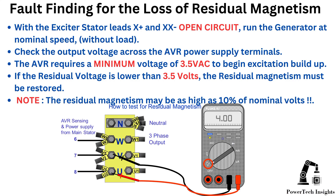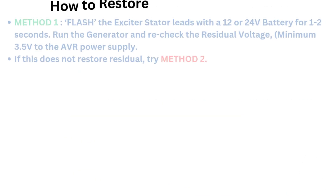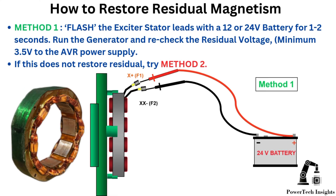Note: the residual magnetism may be as high as 10% of nominal volts. There are three methods to restore the loss of residual magnetism. Method 1 — Flash: flash the exciter stator leads with a 12 or 24V battery for 1 to 2 seconds. Run the generator and recheck the residual voltage — minimum 3.5V to the AVR power supply. If this does not restore residual, try Method 2.